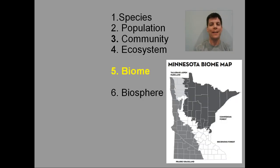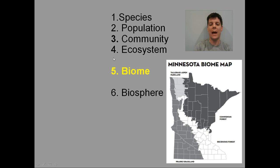Let's take a look at the four different biomes found in the state of Minnesota. We have coniferous forest in the northeastern corner of the state, tall grass aspen parkland in the very northwestern corner, prairie grassland covering most of the western part of the state, and deciduous forest in the southeastern and central parts of the state.